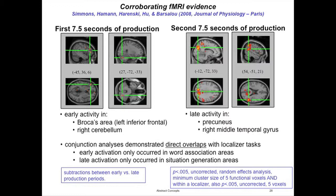In this experiment, participants get a word and have to generate features for 15 seconds inside the scanner — they practice outside the scanner and we collect lists afterwards. They get a word like 'chair' and just generate features for 15 seconds. We divide that 15-second block into halves — seven-and-a-half-second blocks. In the first seven and a half seconds, we have localizer tasks for word association and imagining situations, and we get Broca's area and cerebellar activity in areas typically associated with word association.